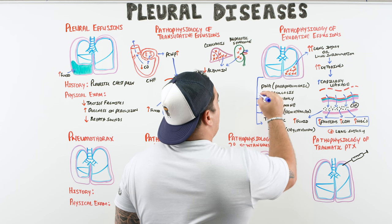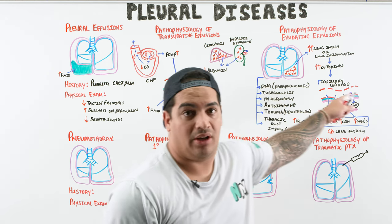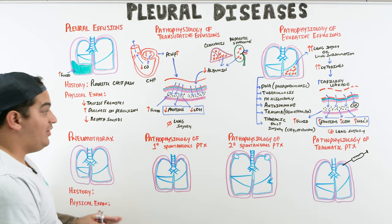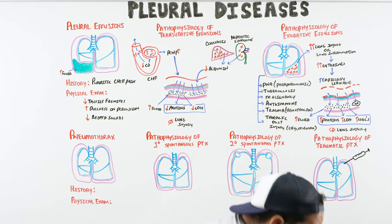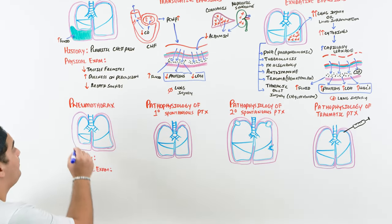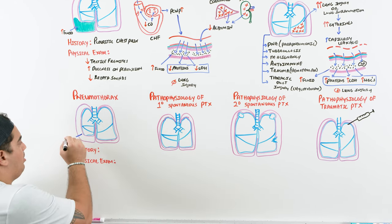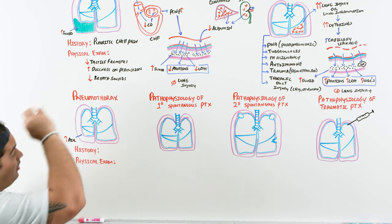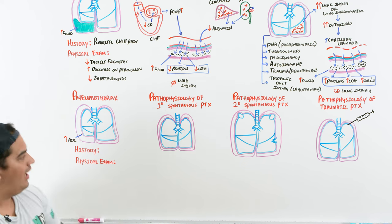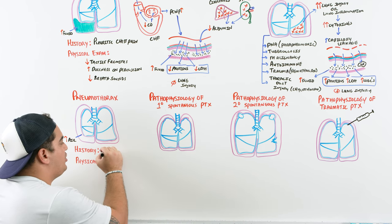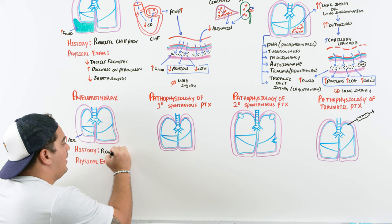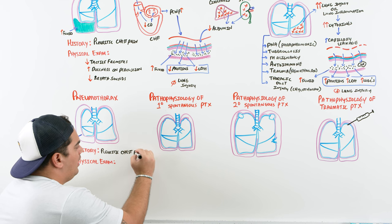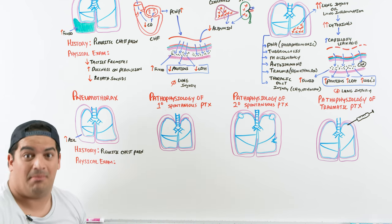Now let's move to pneumothorax. A pneumothorax means there is air present within the pleural cavity. The presentation is similar to pleural effusions: pleuritic chest pain is common, and if the pneumothorax gets large enough it can compress lung tissue, lead to atelectasis, and cause dyspnea.